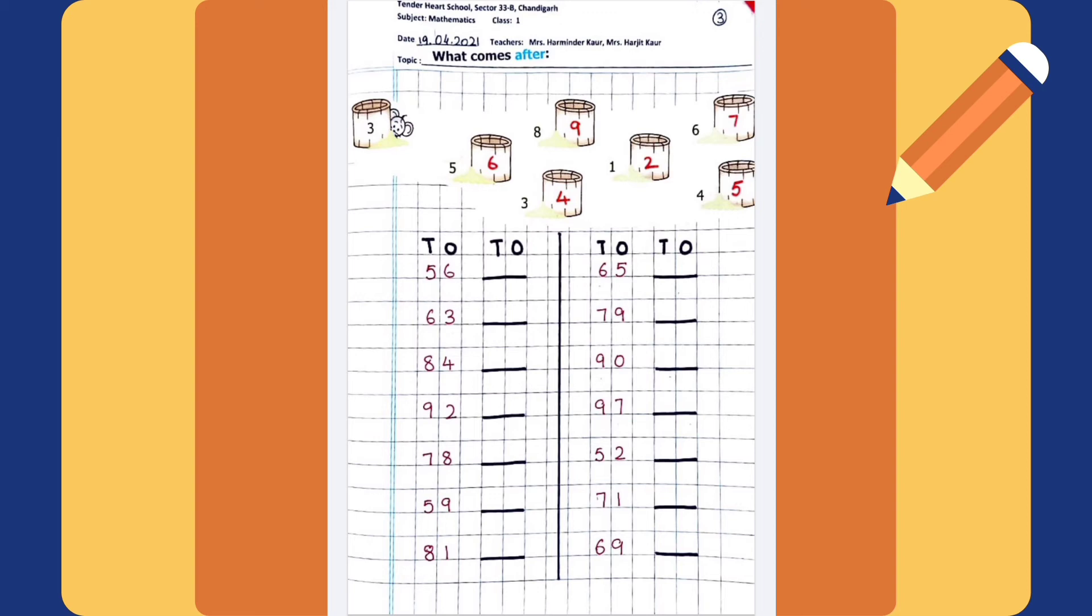Now let's do the exercise. 56 dash, 63 dash, 84 dash, 92 dash, 78 dash, then dash 59, dash 81.